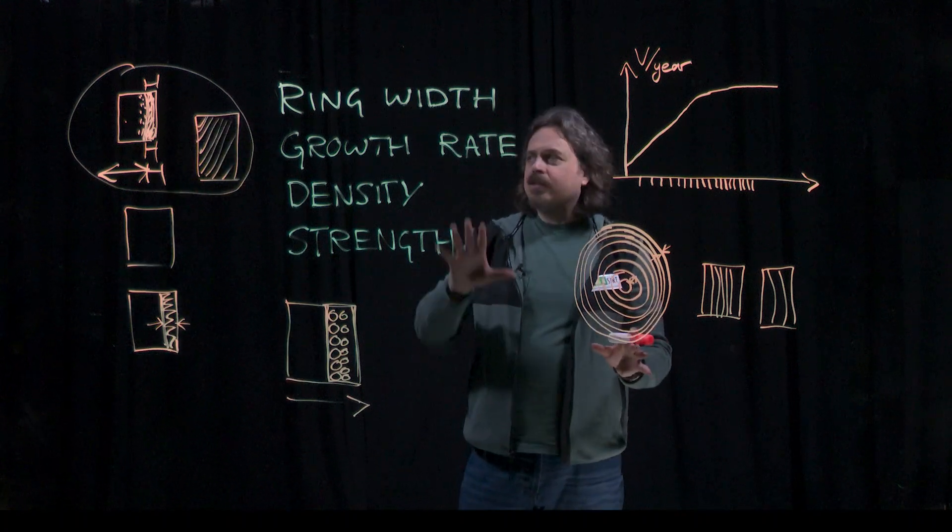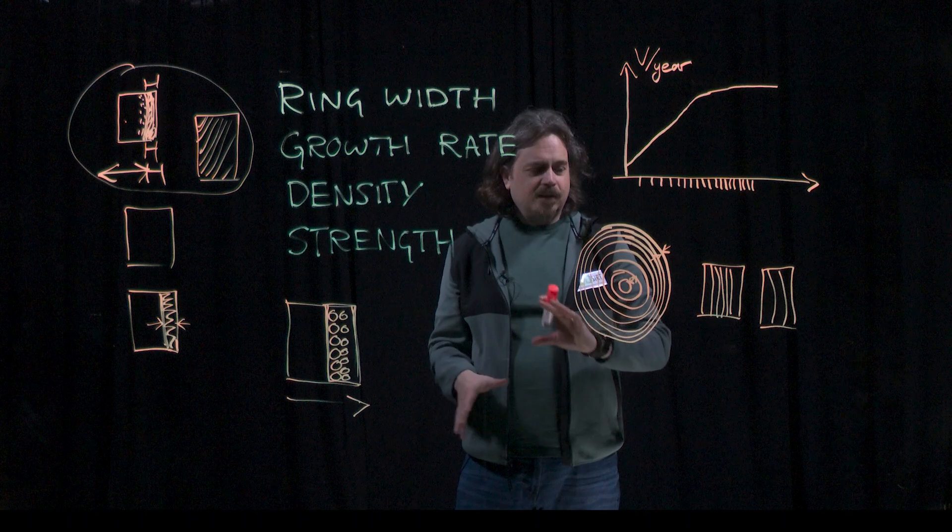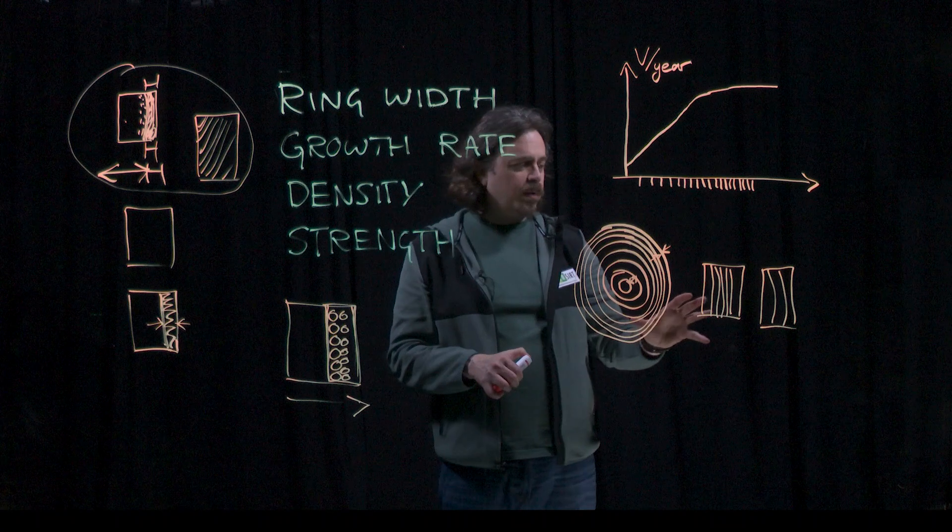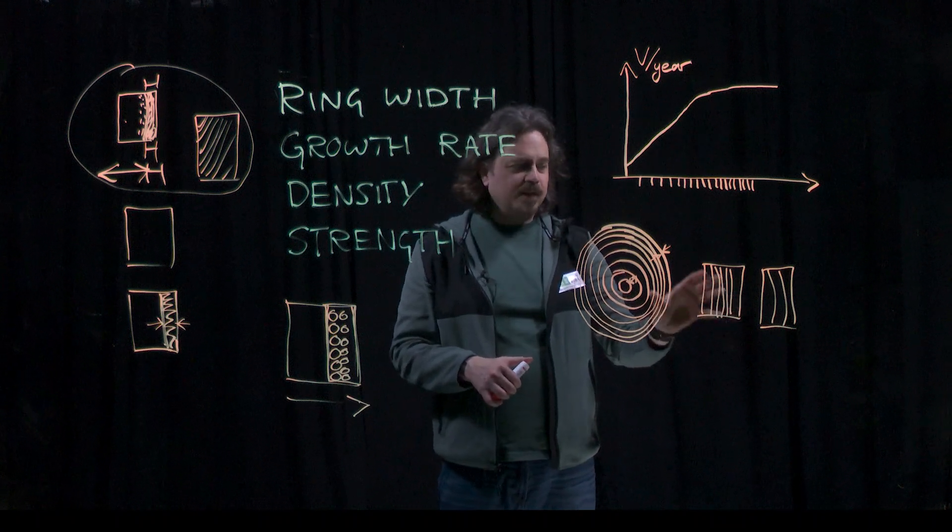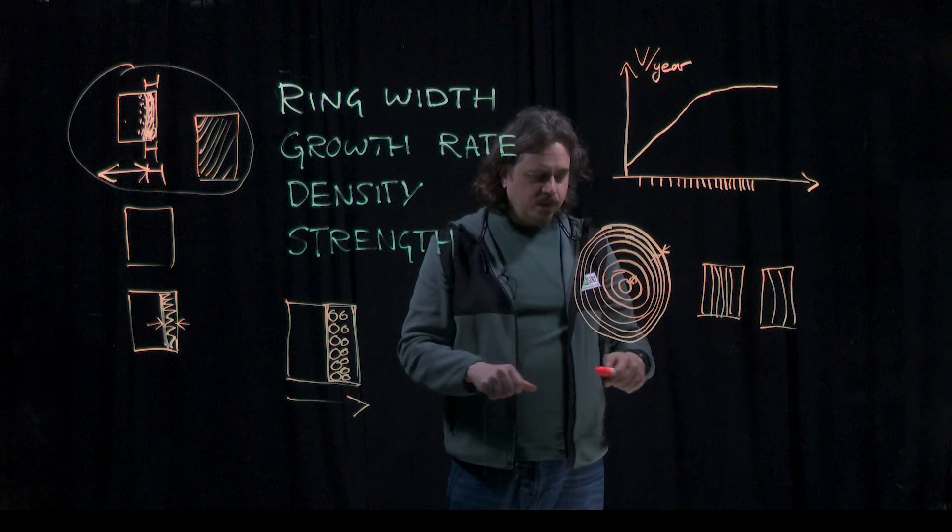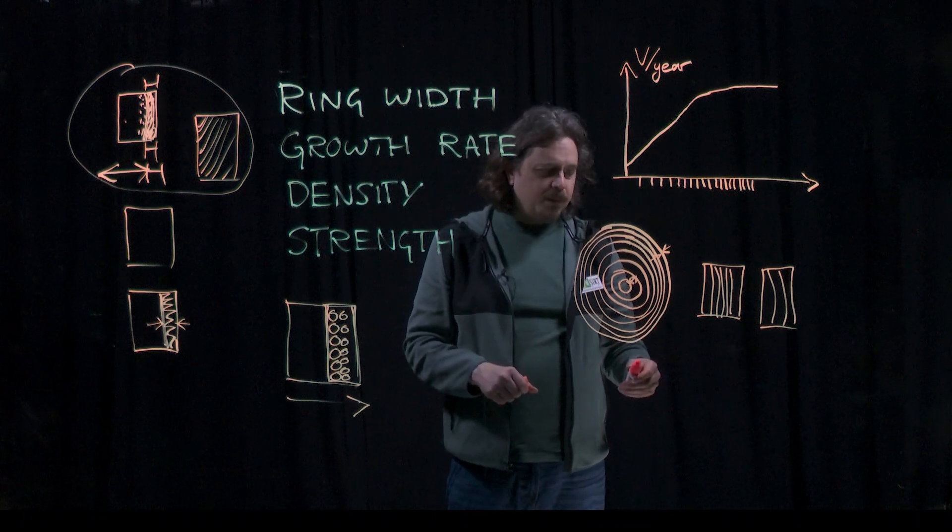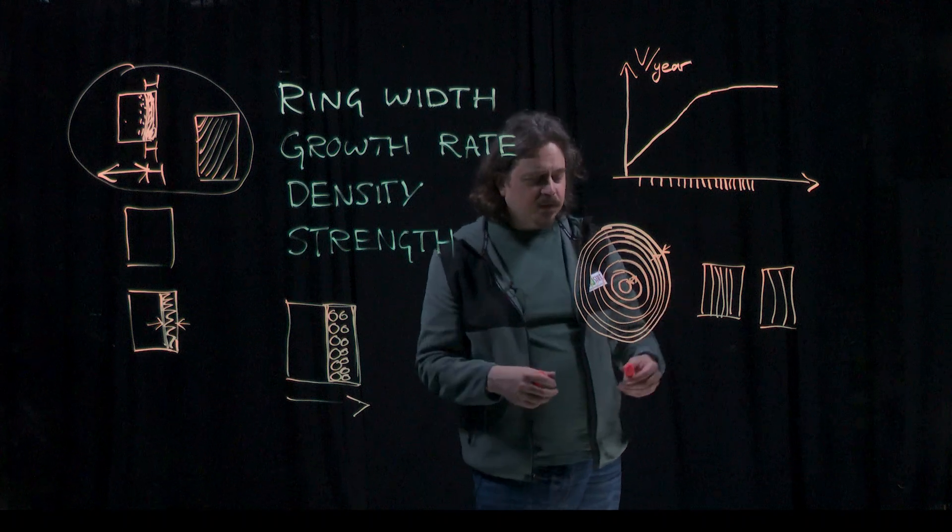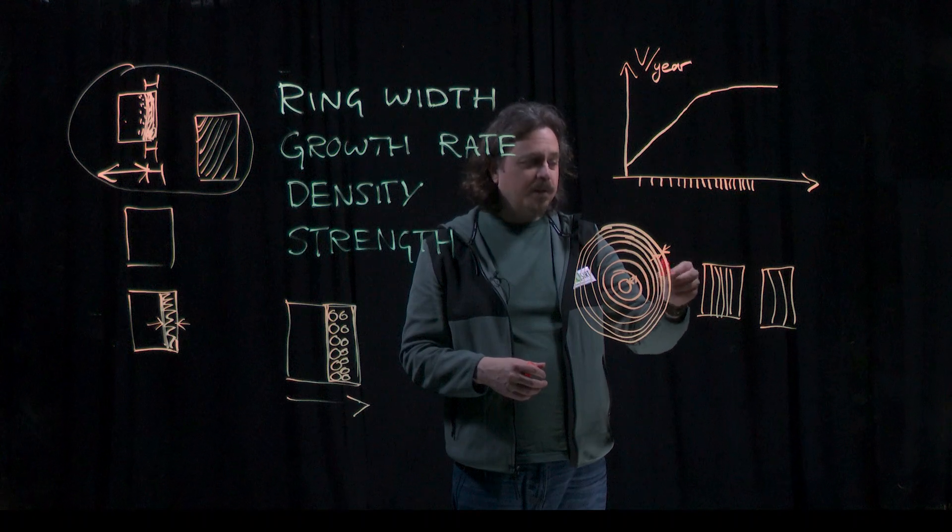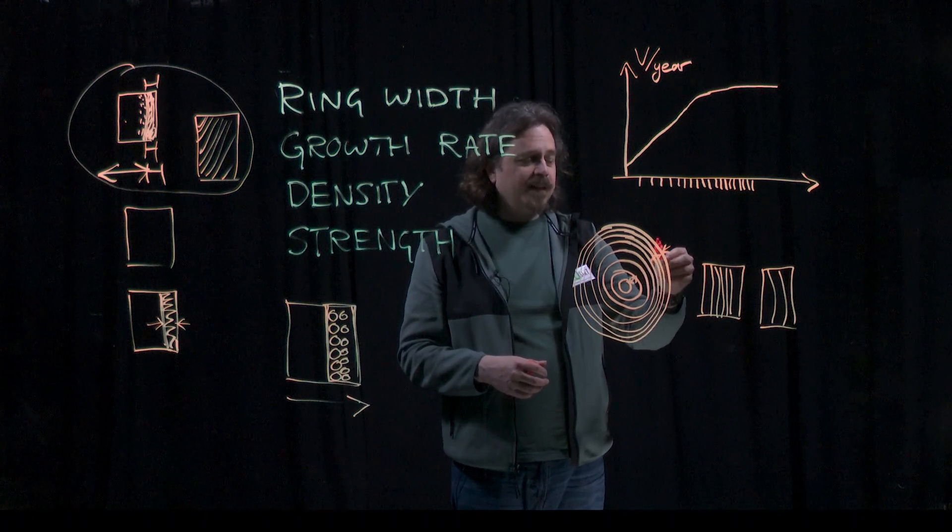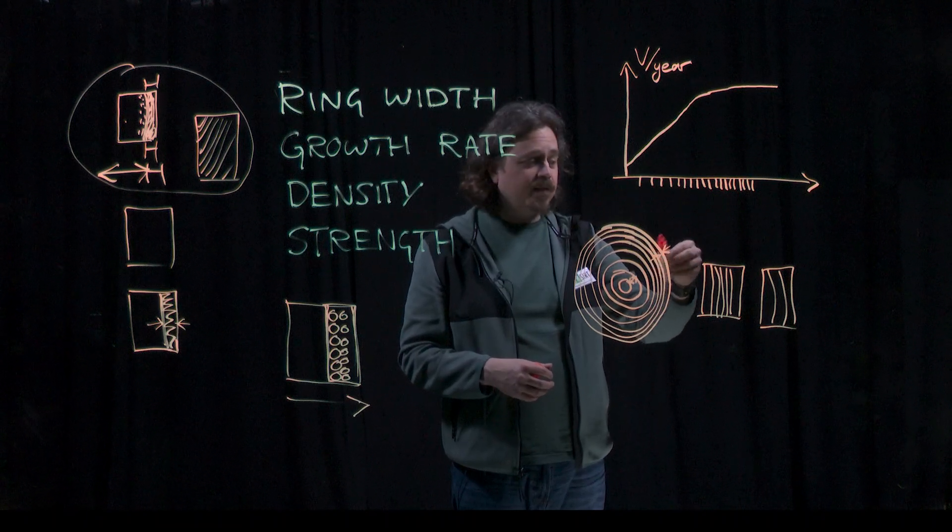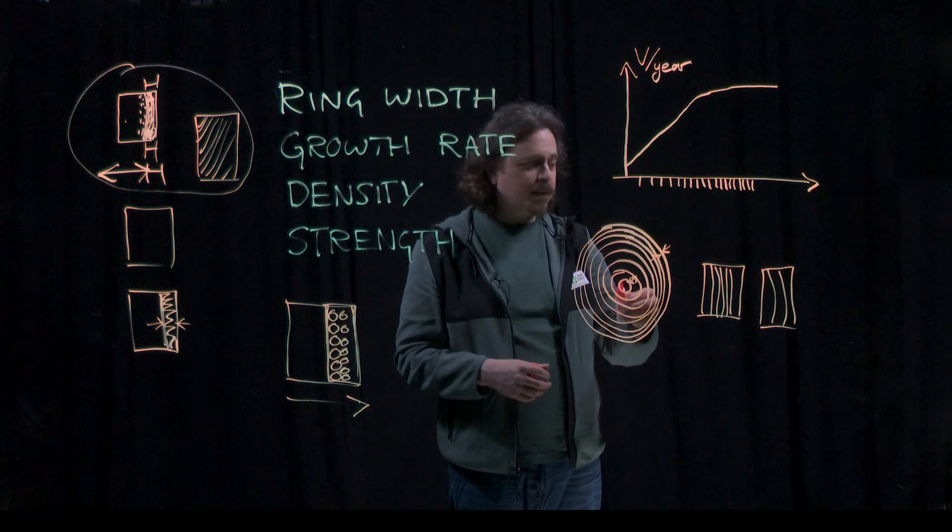That's not to say that ring width isn't useful and actually doesn't correlate with density in other ways. So as I said earlier, if you have small growth rings, that's a sign that it might come from the outside of the log. And in a softwood, usually the older it gets, the better the properties of the wood from our point of view become. So a sign that it's coming from the outer part of the log where you've got mature wood, that's telling you that probably the timber is denser and stiffer and stronger than if it was coming from the juvenile wood in the middle.